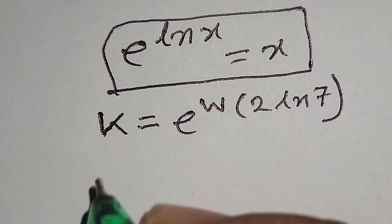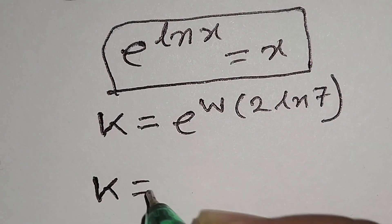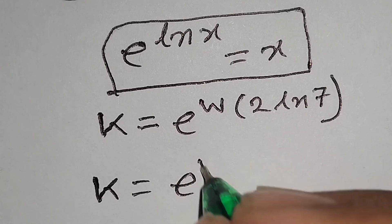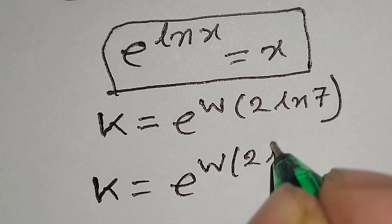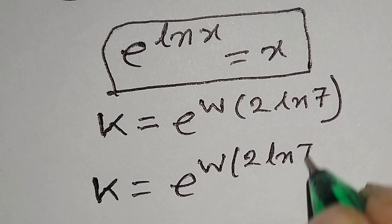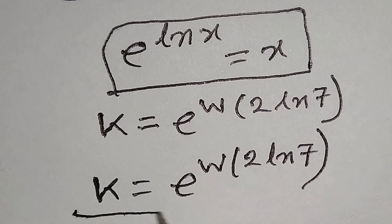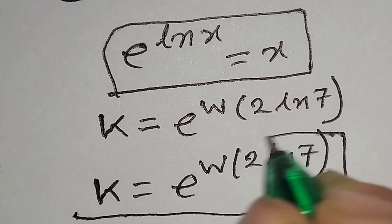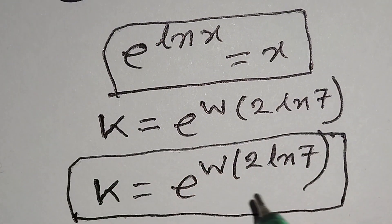So k is equal to e to the power W of 2 times ln 7. This is the final value of k.